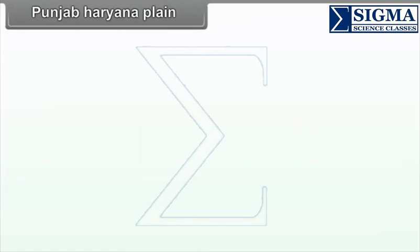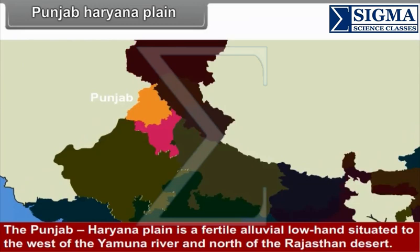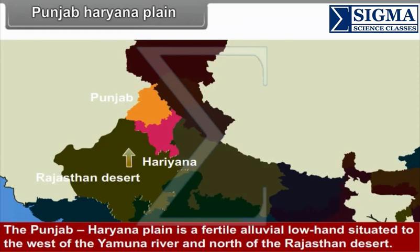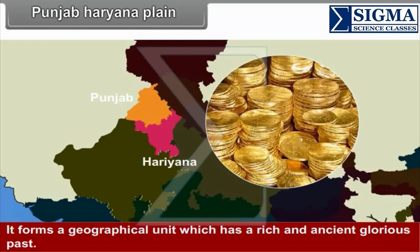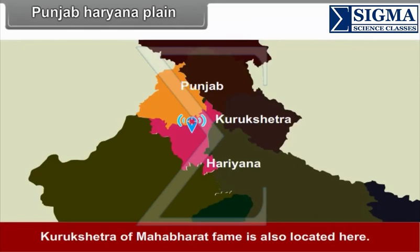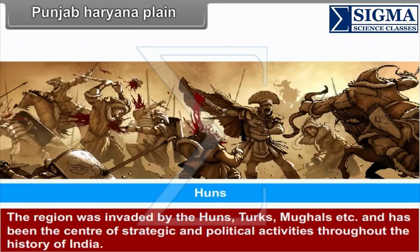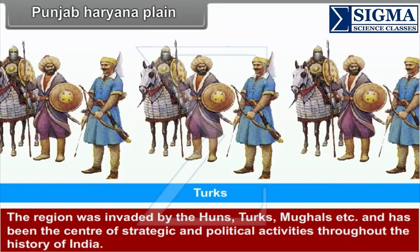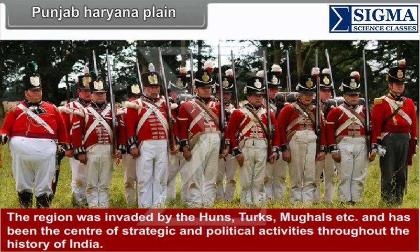The Punjab-Haryana plain is a fertile alluvial lowland situated to the west of the Yamuna River and north of the Rajasthan Desert. It forms a geographical unit with a rich and ancient glorious past. The Indus Valley civilization extended up to Punjab, and Kurukshetra of Mahabharata fame is also located here. The region was invaded by the Huns, Turks, Mughals, etc., and has been the center of strategic and political activities throughout the history of India.